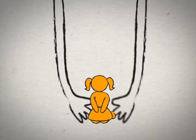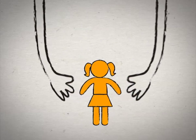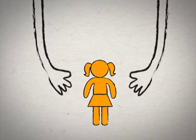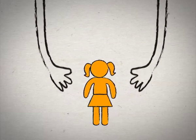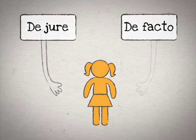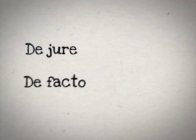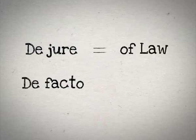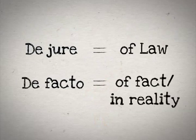It is important to keep in mind that non-discrimination for women must exist both de jure and de facto. De jure means of law, and de facto means of fact — meaning what is actually happening in reality.